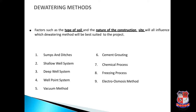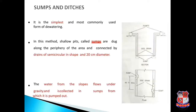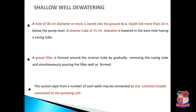The first method is sumps and ditches. You can see the plan and section diagram of the sump and ditches method. It is the simplest and most commonly used form of dewatering. In this method, shallow pits called sumps are dug along the periphery of the area and connected by drains of semicircular shape and 20 centimeter diameter. Water flows under gravity and is collected in the sumps, from which it is pumped out.